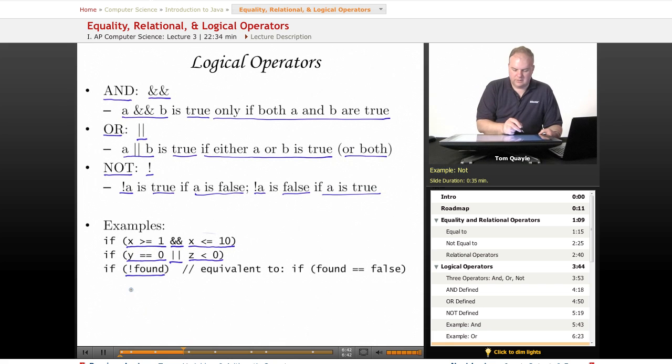And here's an example with not. If not found, and this is equivalent to if found is equal to false. This is something that we might use as a loop test to determine if we want to continue running the loop or not. If we have not found what we're looking for, we continue the loop. Once we have found it and found is true, then we would exit the loop.